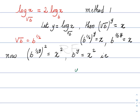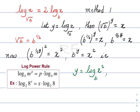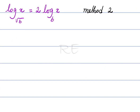Which means that y, the exponent, is equal to log base b of x squared. Using the log power rule, y is equal to 2 log base b of x. Therefore, log base square root of b of x is equal to 2 log base b of x.